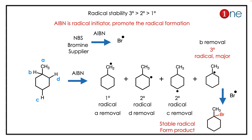You should know radical stability: tertiary radical is more stable than secondary, which is more stable than primary. Let us look at our reactant — methylcyclohexane. There are four different types of protons: a, b, c, d. If proton 'a' is removed, a primary radical forms.